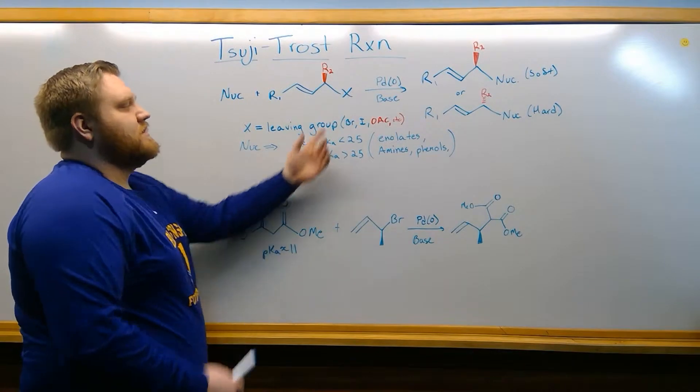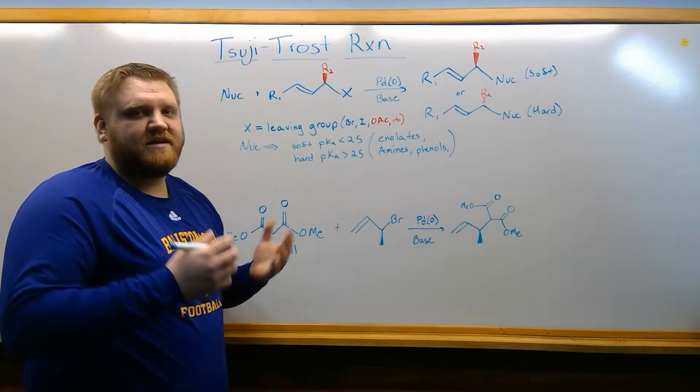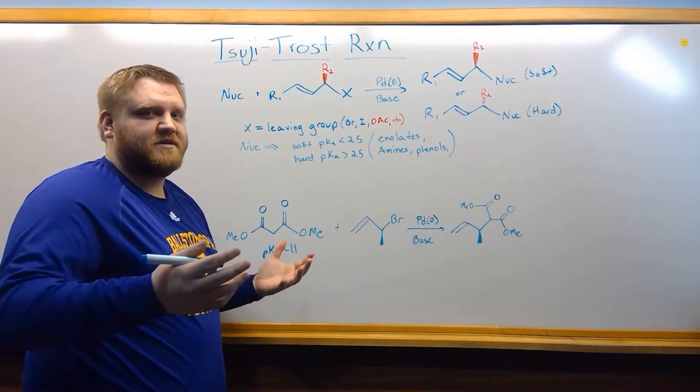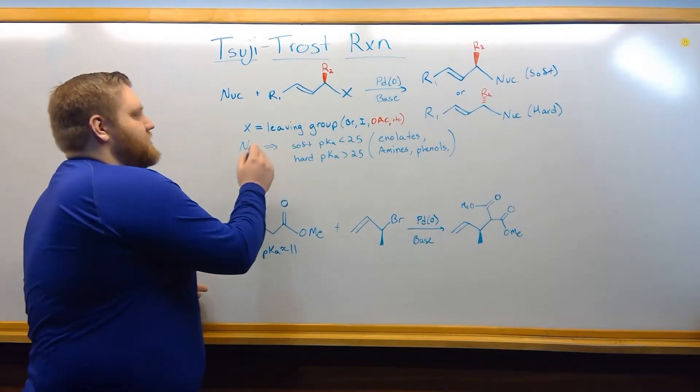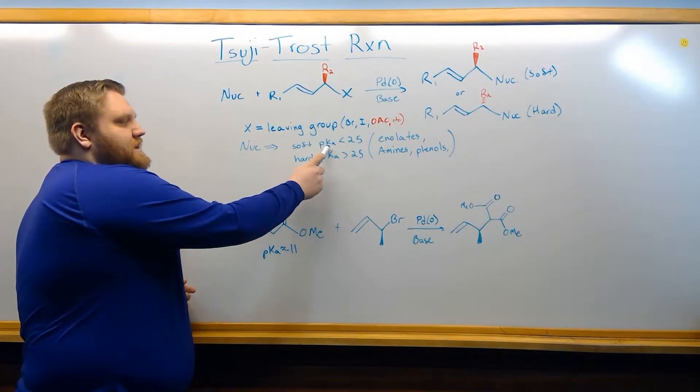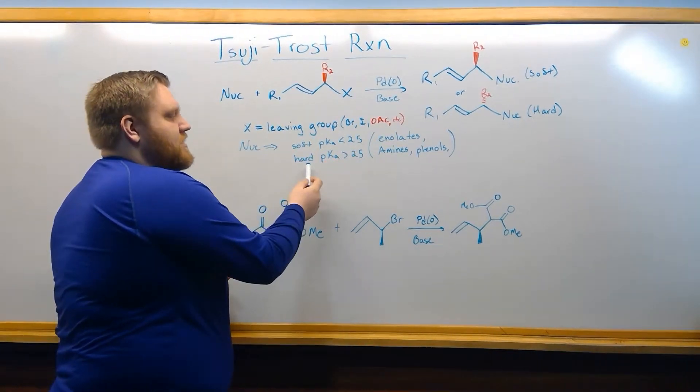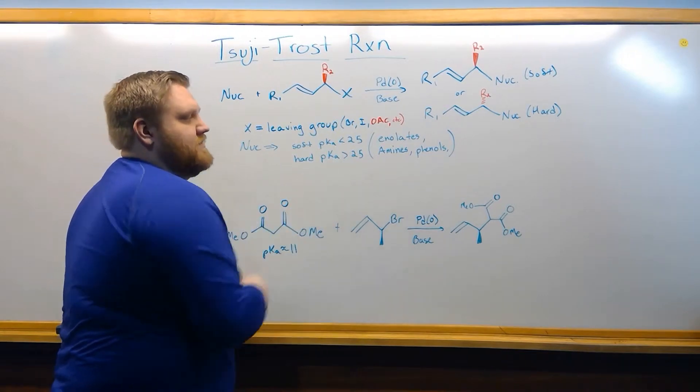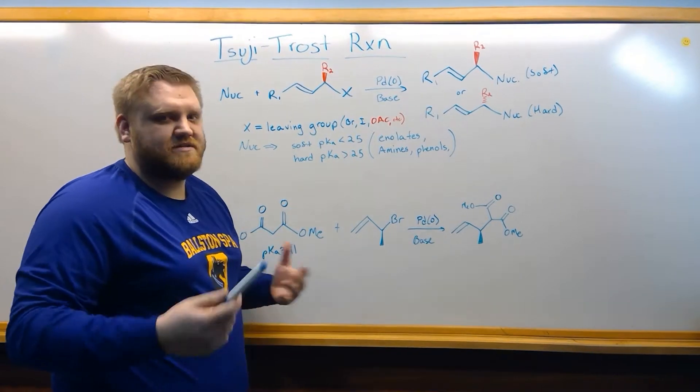Our leaving groups are our halogens, but they can also be acetoxy groups or simpler esters, and our nucleophiles, our soft ones, have a pKa less than 25, and our hard ones have pKa greater than 25. Those are enolates, amines, phenols, etc.